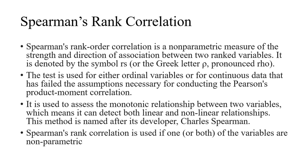Spearman's rank correlation, or Spearman's rank order correlation, is a non-parametric measure of the strength and direction of association between two ranked variables. It is noted by the symbol RS or the Greek letter rho. The test is used for either ordinal variables or for continuous data that has failed the assumptions of Pearson's product moment correlation. It is used to assess the monotonic relationship between two variables, which means it can detect both linear and nonlinear relationships.